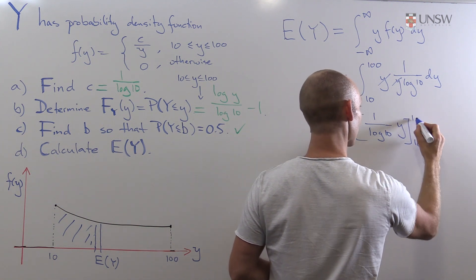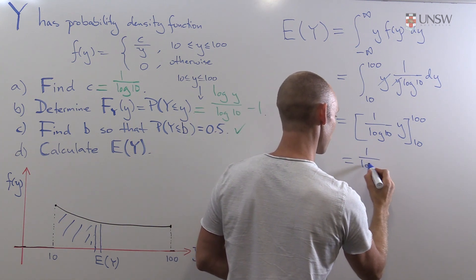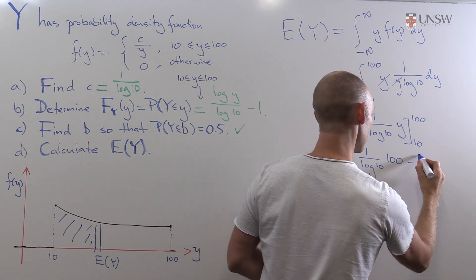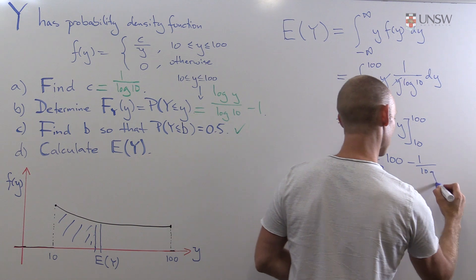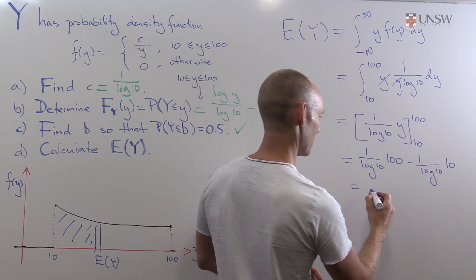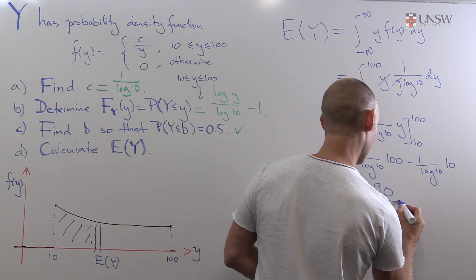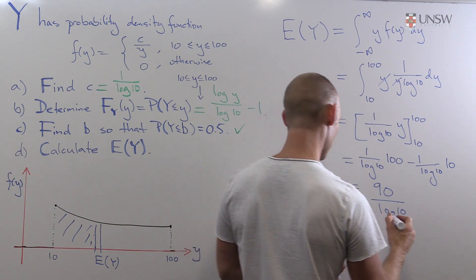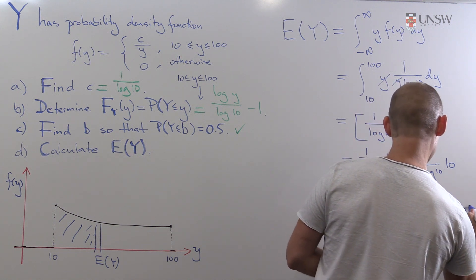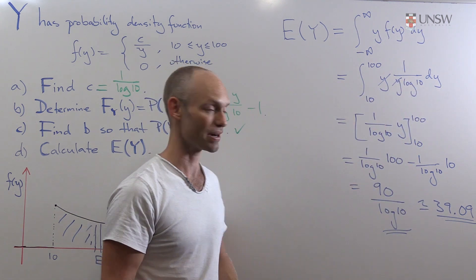So that's just 1 over log 10, y between 10 and 100. And there we get our answer. 1 over log 10 times 100 minus 1 over log 10 times 10. And that does give us 90 over log 10. And apparently that's roughly around about 39.09. So there's our answer to part D as well.